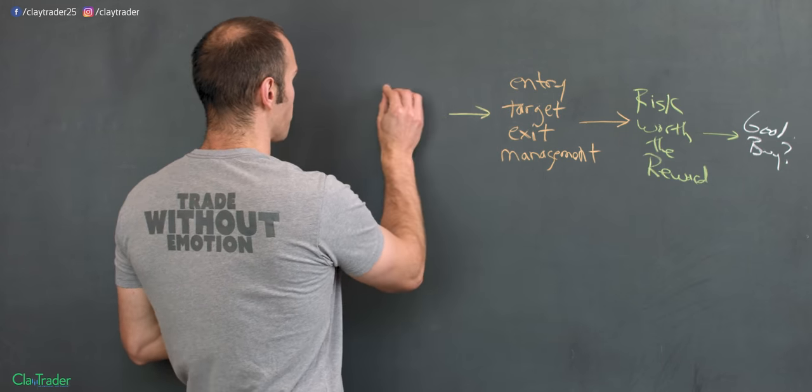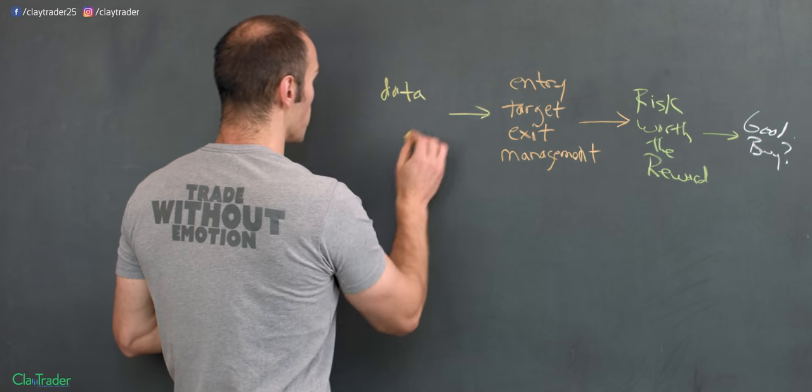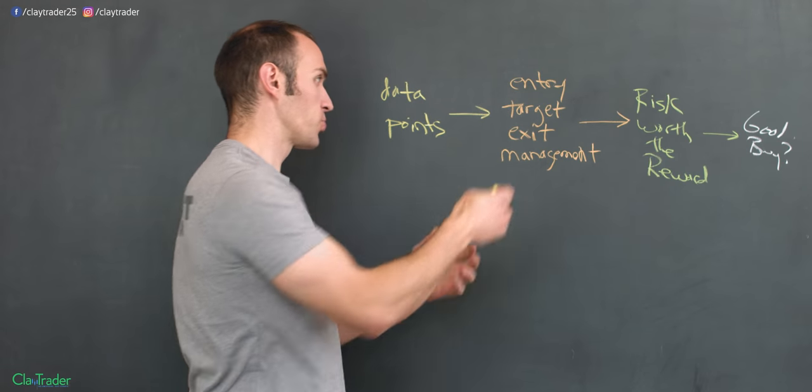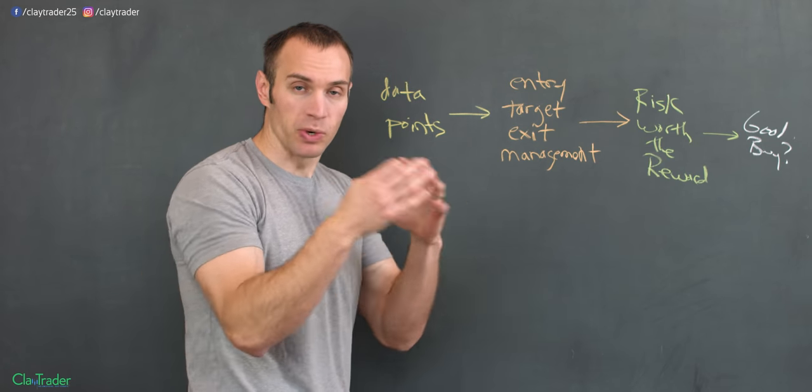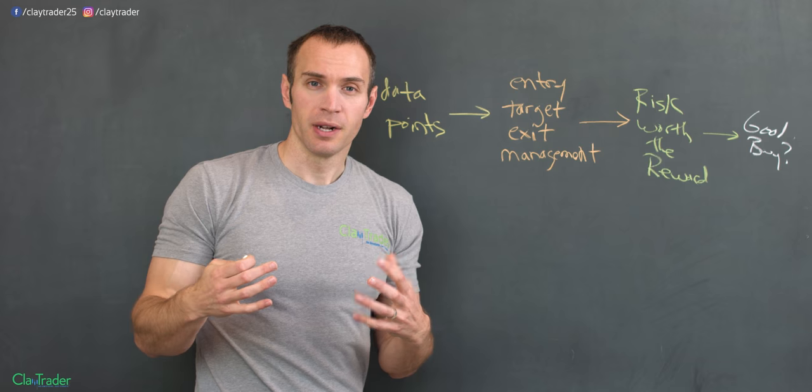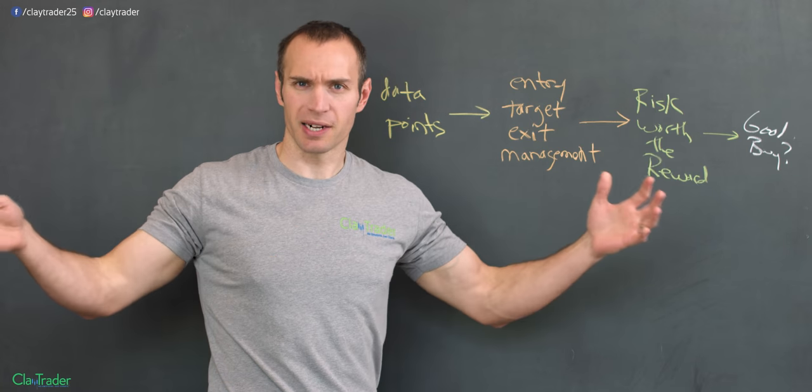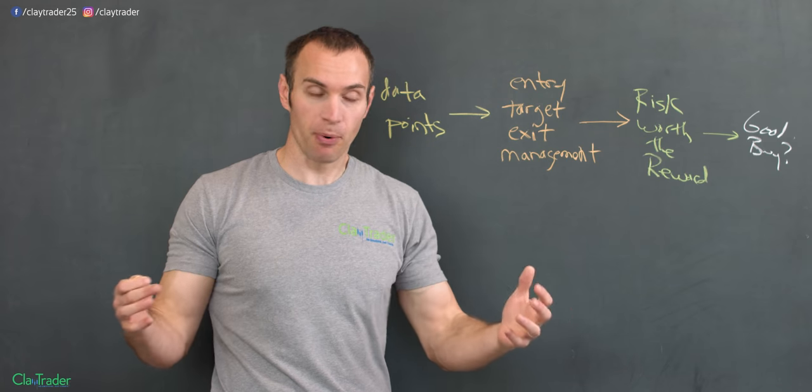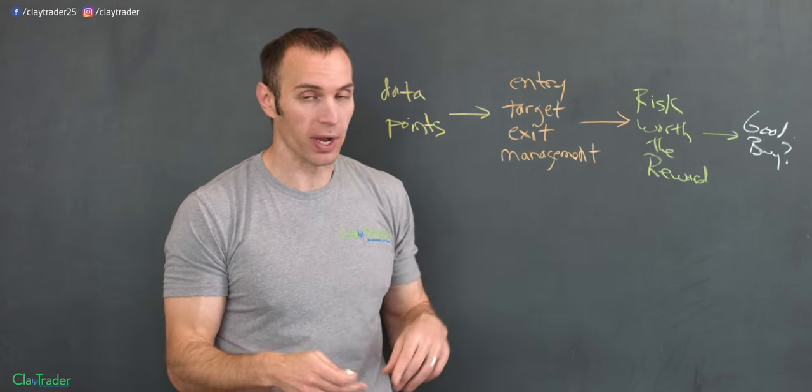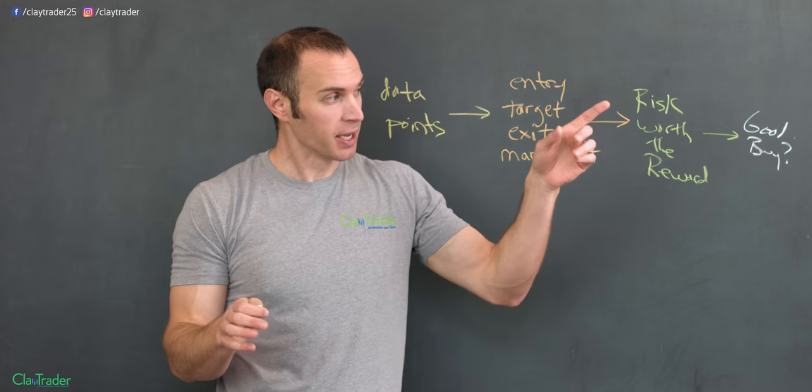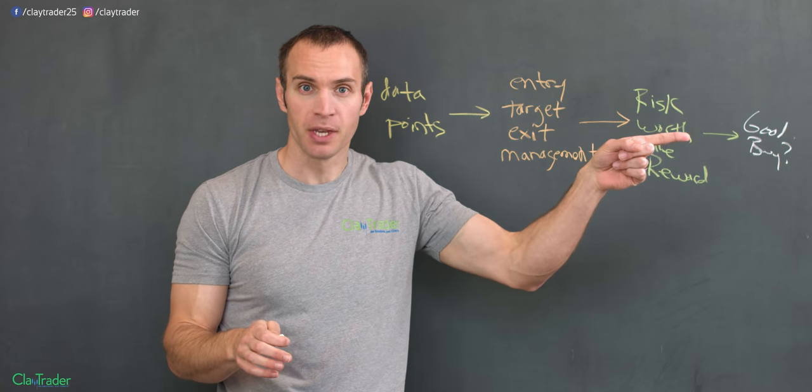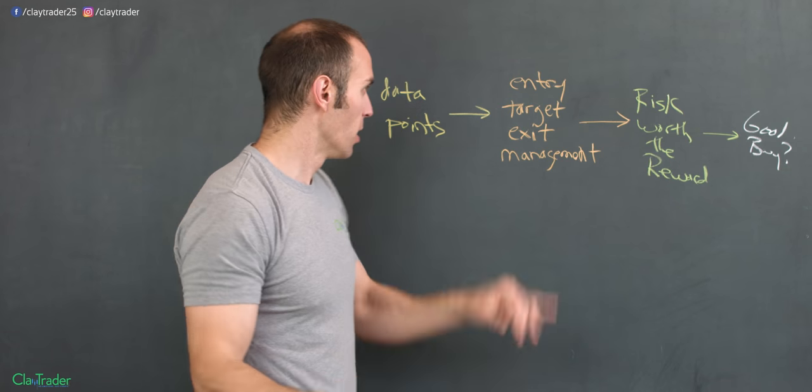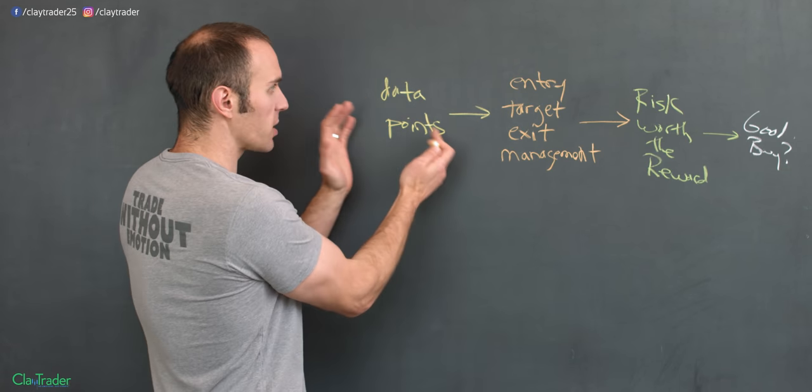So the next thing becomes, well, you need data points, right? You need information that can tell you where entries, targets, you know, exits, management, you need data, right? You need information. That's what, I mean that just goes across anything in life, right? If you're crossing a busy street, you need data points. You need information. What kind of data points? Well, oh I see a big truck coming that way. I probably shouldn't cross right now, given I have that piece of information. So in crossing the street you get that information by what? By looking both ways. What we're all taught as kids. But in trading, okay, well how do you get those data points?